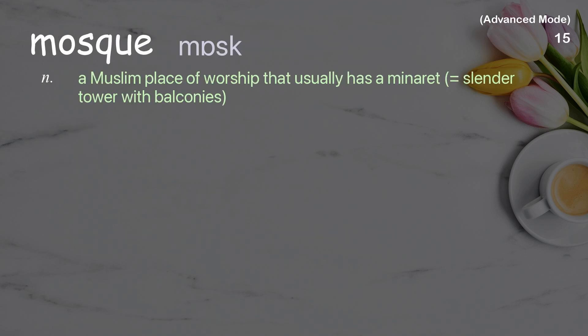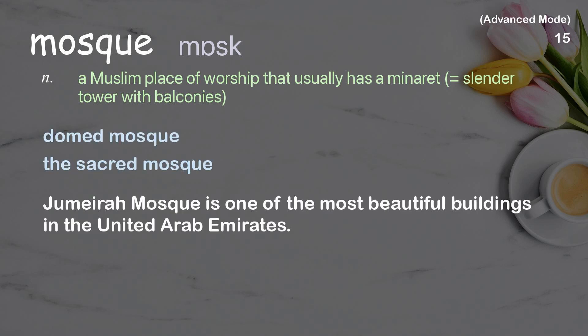Mosque: A Muslim place of worship that usually has a minaret — a slender tower with balconies. Examples: Domed mosque. The sacred mosque. Jumeirah mosque is one of the most beautiful buildings in the United Arab Emirates.